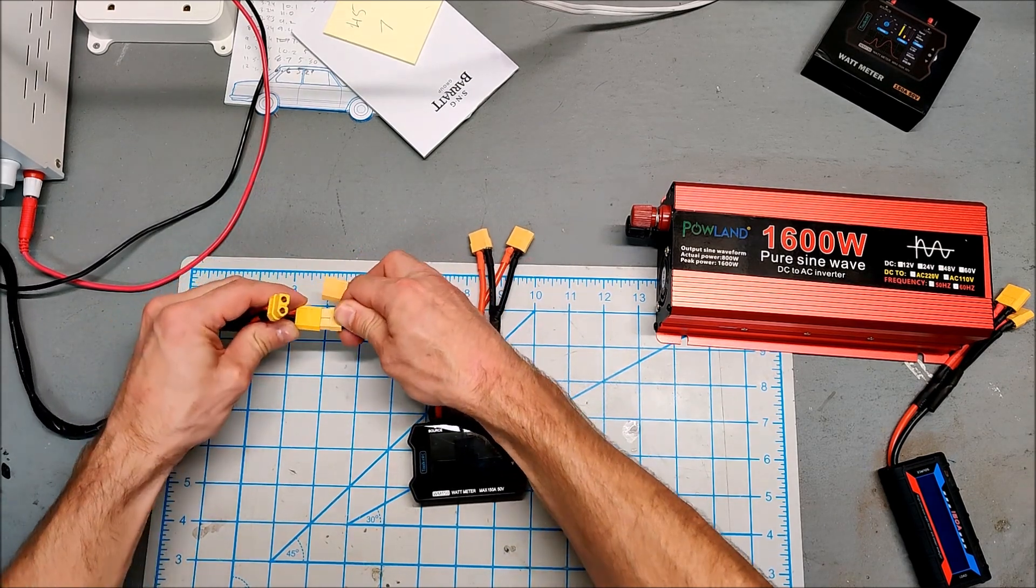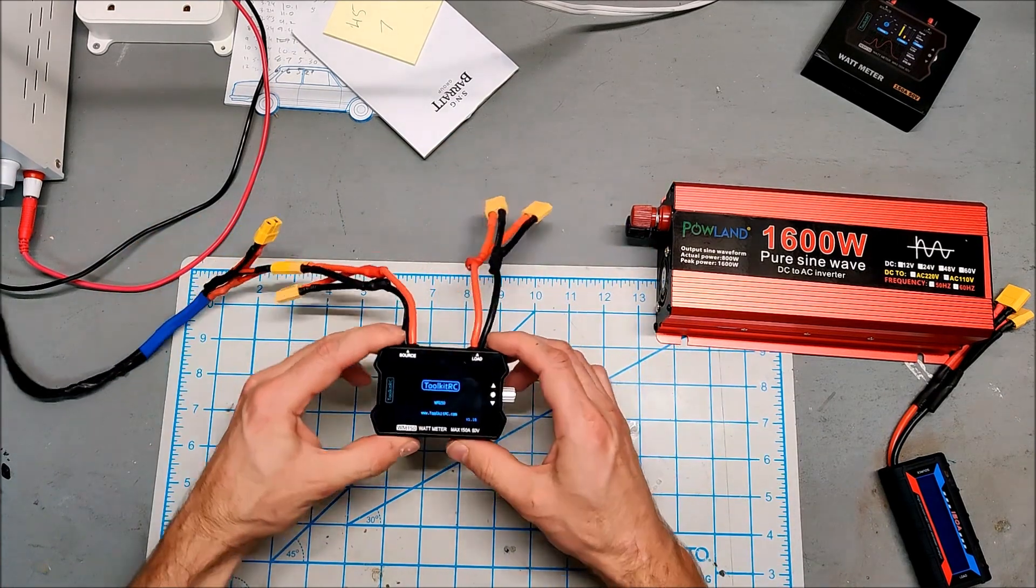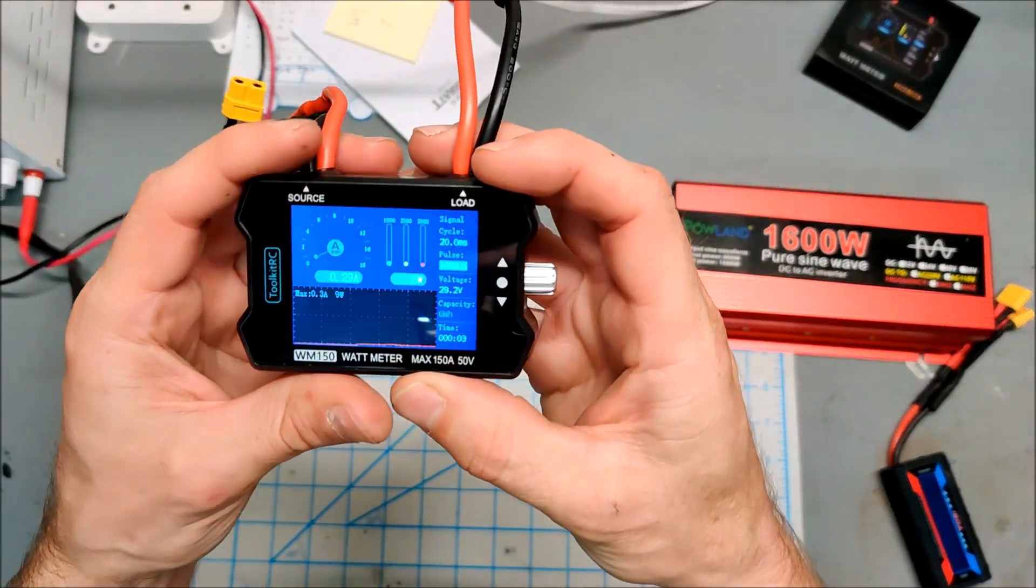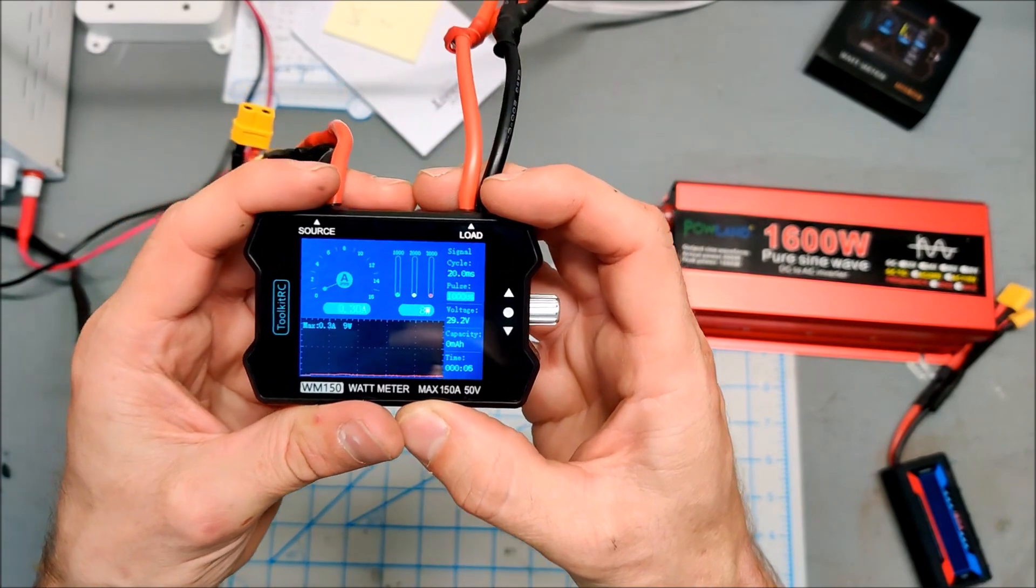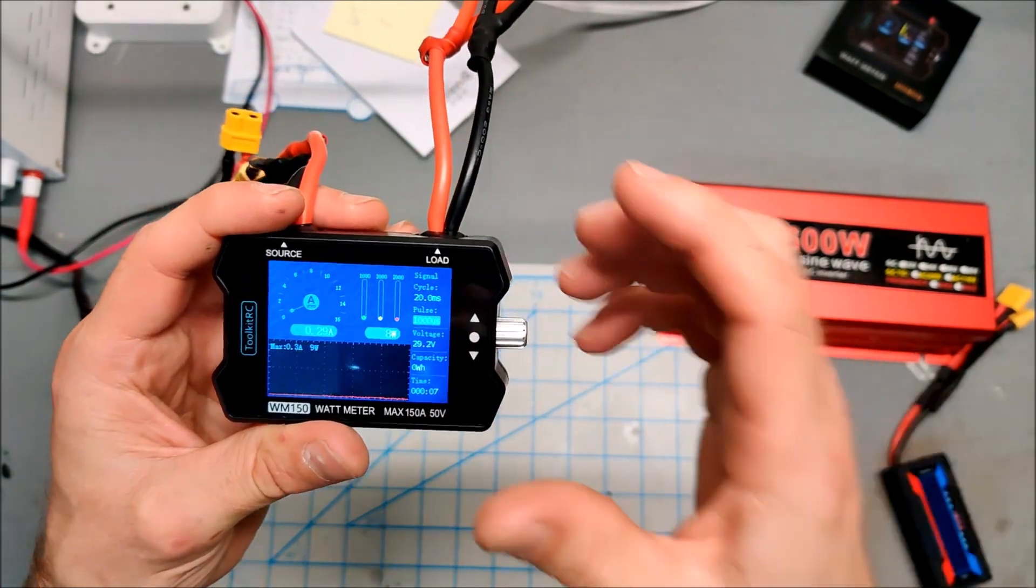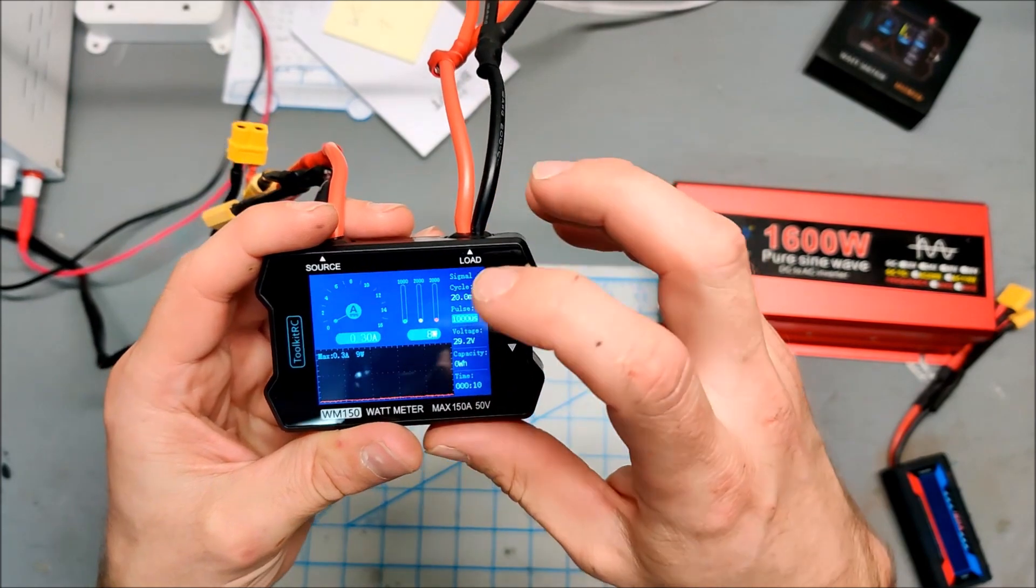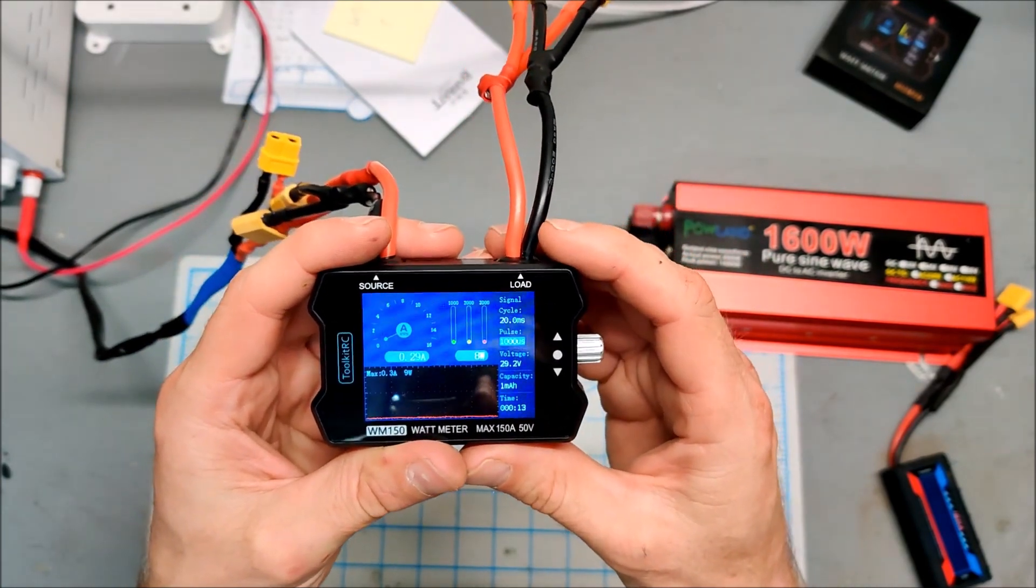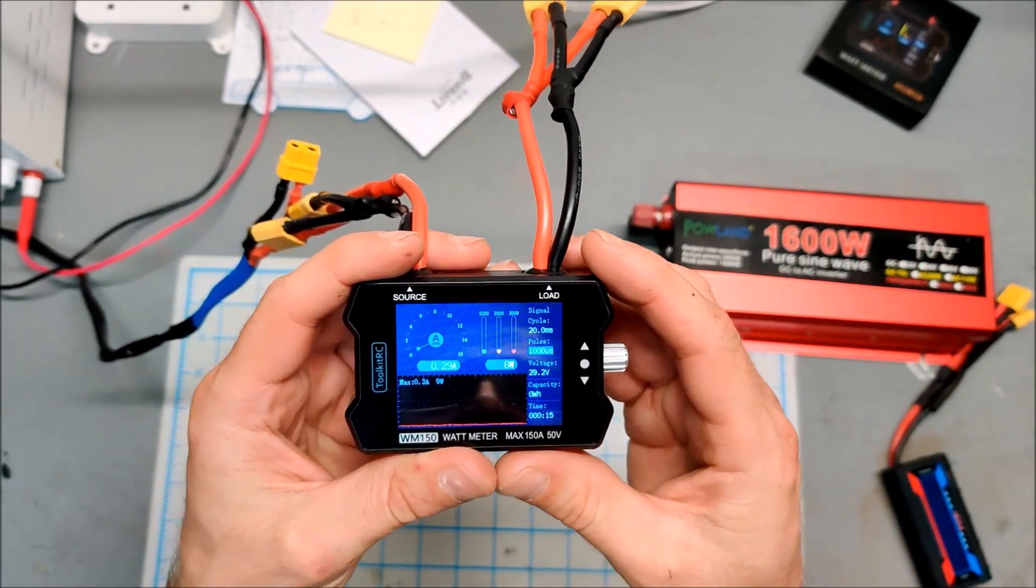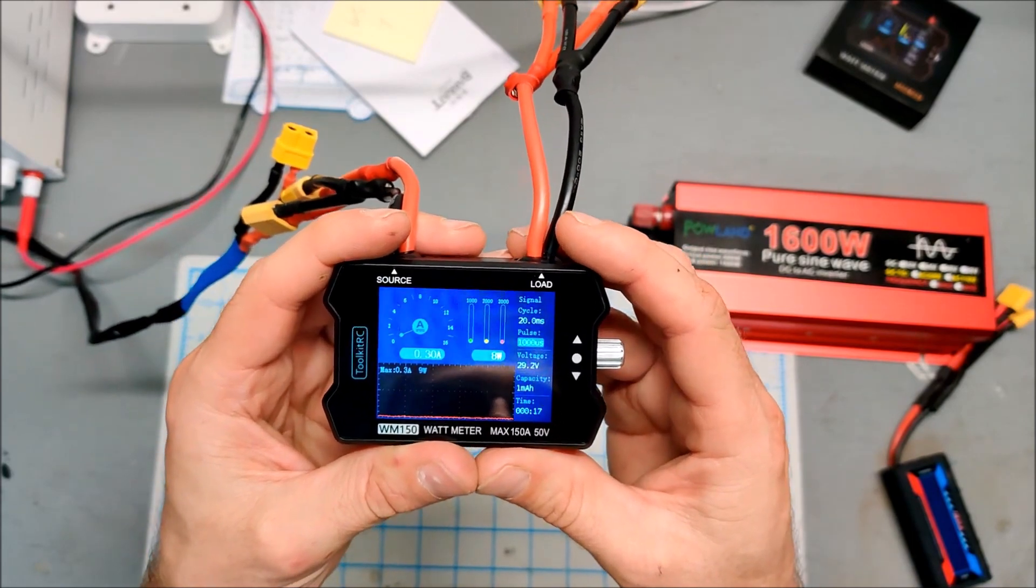This is the source side, so I'm going to plug in from my power wall. And there is the display, very nice. Interesting that we're pulling 0.3 amps, 8 watts. I mean, I guess the meter's pulling 8 watts just standing by.